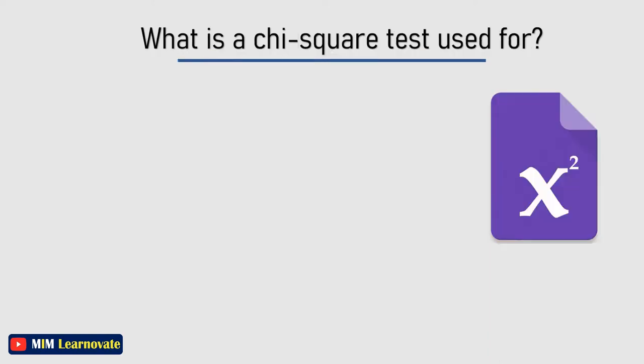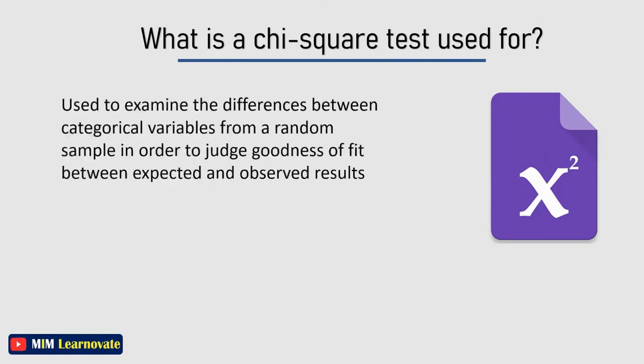What is a chi-squared test used for? Chi-squared is a statistical test used to examine the differences between categorical variables from a random sample in order to judge goodness of fit between expected and observed results.